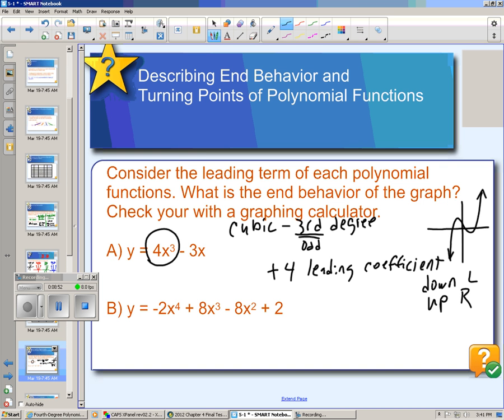We also want to describe the turning points. Actually not describe, just tell how many there are. The turning points are the places where the graph changes direction. So right there, that's a turning point. And right here is another turning point. So there are two turning points.